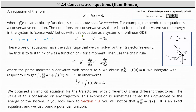Let us write the differential equation x double prime plus f of x equals zero as a system of nonlinear ordinary differential equations. To do this, we begin with x prime equals y, and if x prime equals y, then y prime equals x double prime, referring back to the original equation where x double prime equals negative f of x. So now we have our system: x prime equals y and y prime equals negative f of x.